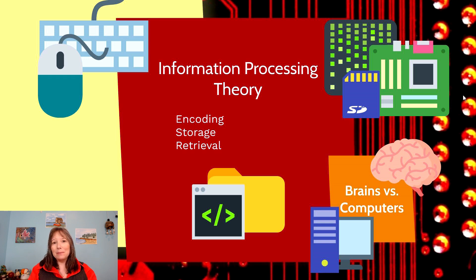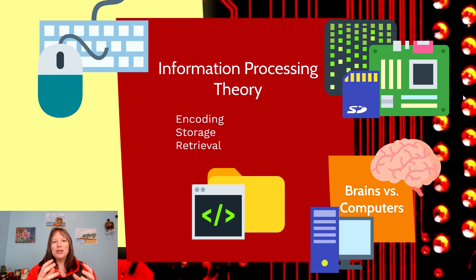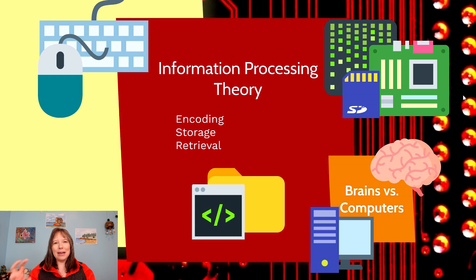Comparing this to a computer is the idea that you may have to go through the correct drives — through the C drive to documents, finding the right file folder to retrieve the data you want. So the information processing theory makes it seem like our brains and computers are parallel in their input, storage, and retrieval processes.